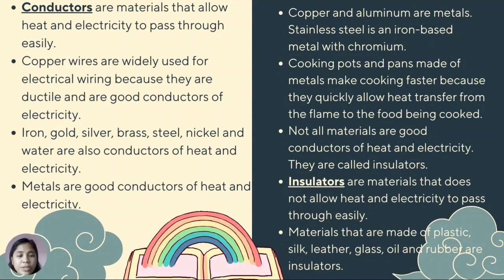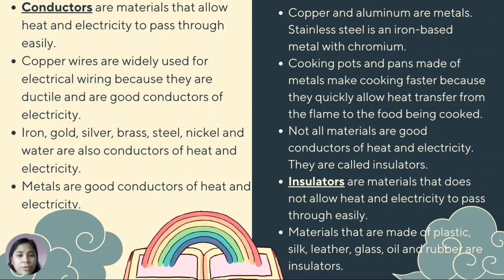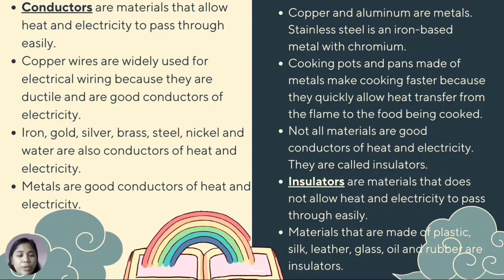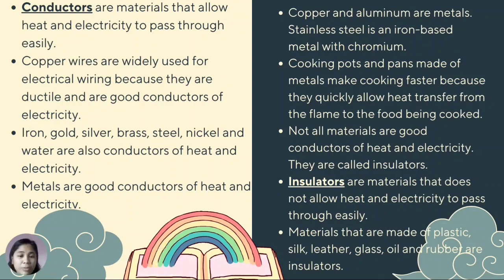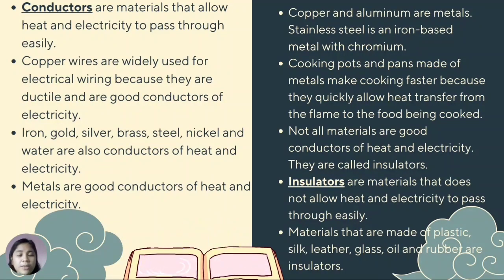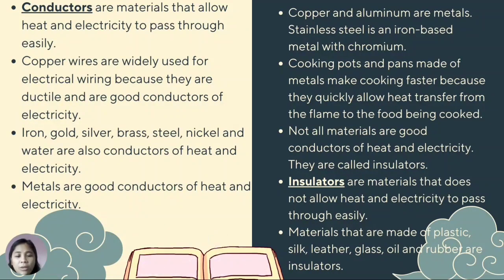Conductors are materials that allow heat and electricity to pass through easily. Copper wires are widely used for electrical wirings because they are ductile and are good conductors of electricity. Iron, gold, silver, brass, steel, nickel, and water are also conductors of heat and electricity. Metals are good conductors of heat and electricity. Copper and aluminum are metals. Stainless steel is an iron-based metal with chromium. Cooking pots and pans made of metals make cooking faster because they quickly allow heat transfer from the flame to the food being cooked.